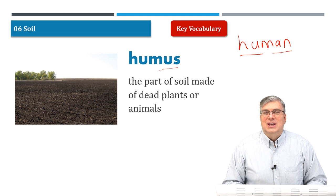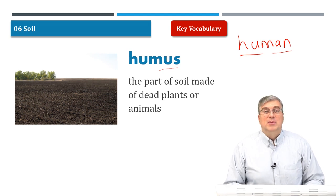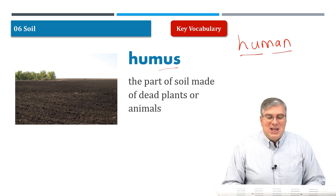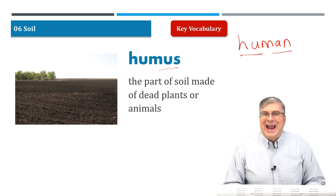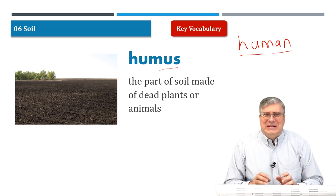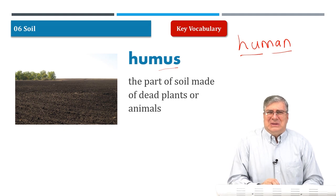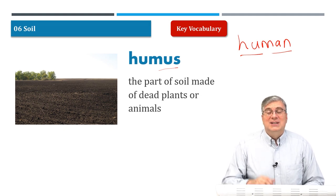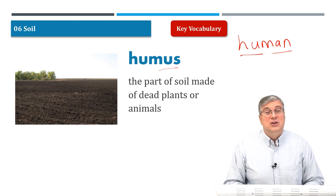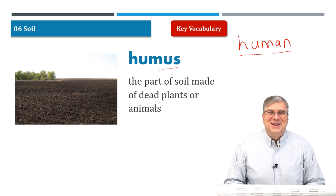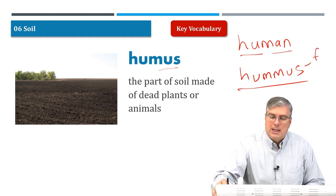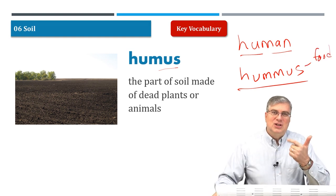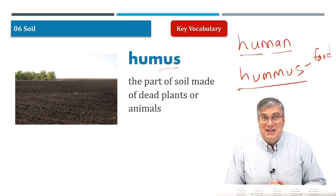Also be careful because humus is not hummus. Hummus is a food from the Middle East. Humus is the part of soil made from dead plants or animals. So don't get them confused. 'I want some humus for dinner' — that's horrible! But hummus is very delicious and nutritious. Humus is spelled H-U-M-U-S. Be careful with pronunciation and don't get it mixed up with the food.